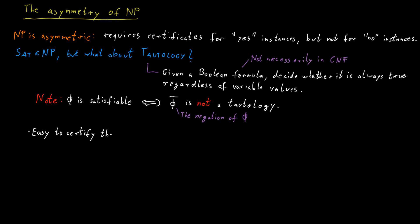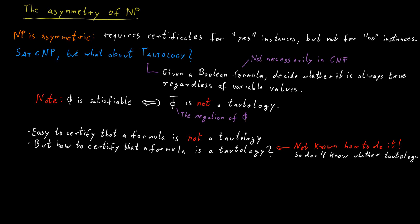It is easy to prove to a verifier that a formula is not a tautology. For that, we would just provide an assignment that would make the formula false, and that would prove that there is an assignment that makes the formula false and therefore the formula cannot be a tautology. But how would we prove that the formula is always satisfied? What would be a certificate and how could a verifier easily check that certificate? It turns out that it's not known how to do this, and because of that tautology is not known to be contained in NP.